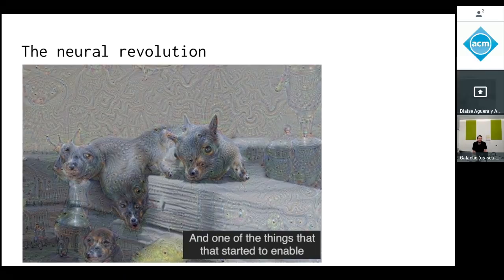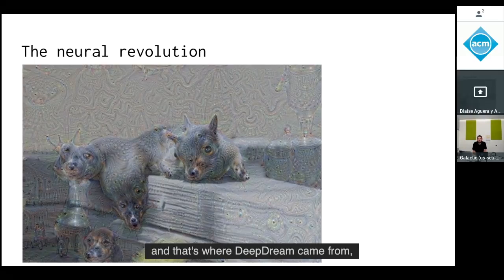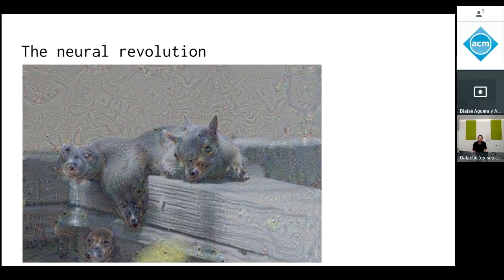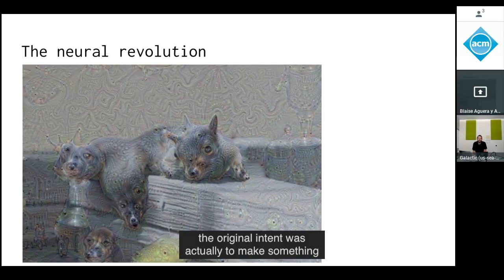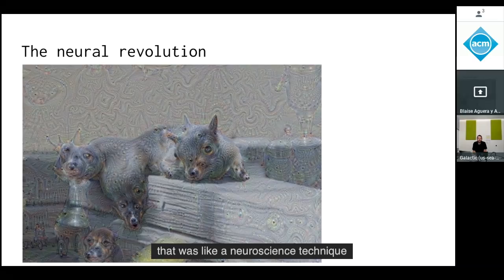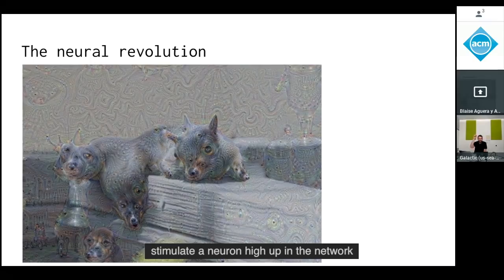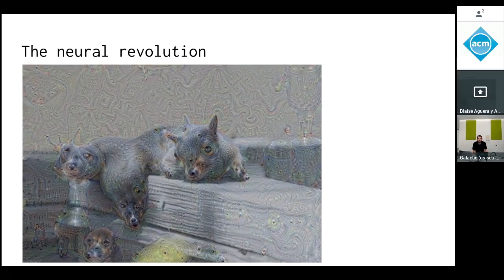One thing this started to enable is the ability to run these networks in reverse — that's where Deep Dream came from. When Alex Mordvintsev, who is now on our team at Google, came up with Deep Dream, the original intent was to create something like a neuroscience technique for deep networks — to stimulate a neuron high up in the network and see what kinds of stimuli create that activation.